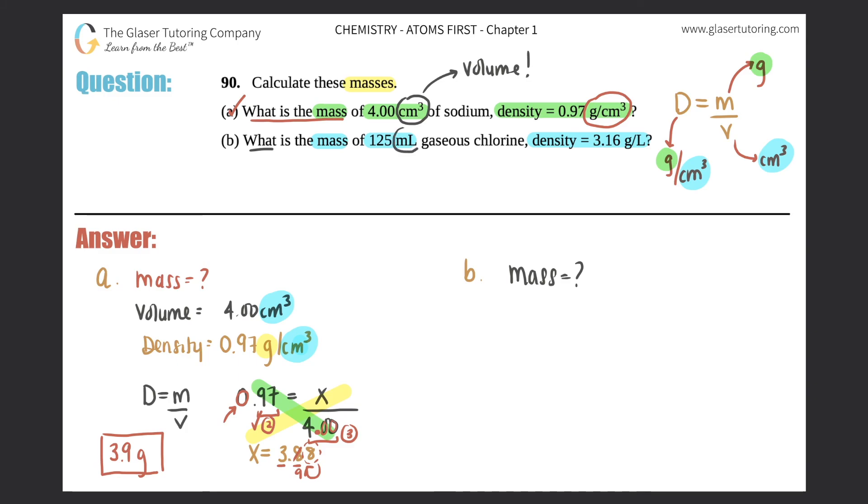Milliliter, just like you see in centimeters cubed, that's also another volume. So we have a volume of 125 milliliters, and then we have a density of 3.16 grams per liter.